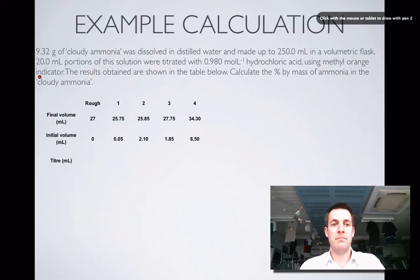Here is the question. 9.32 grams of cloudy ammonia was dissolved into distilled water and made up to 250 mL in one of these volumetric flasks that we know all about now.